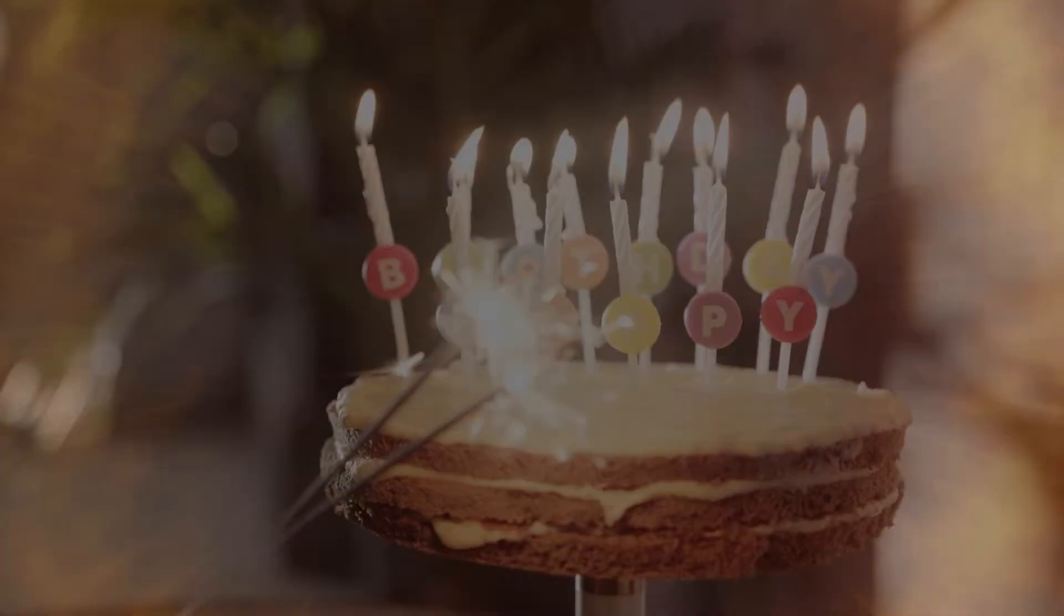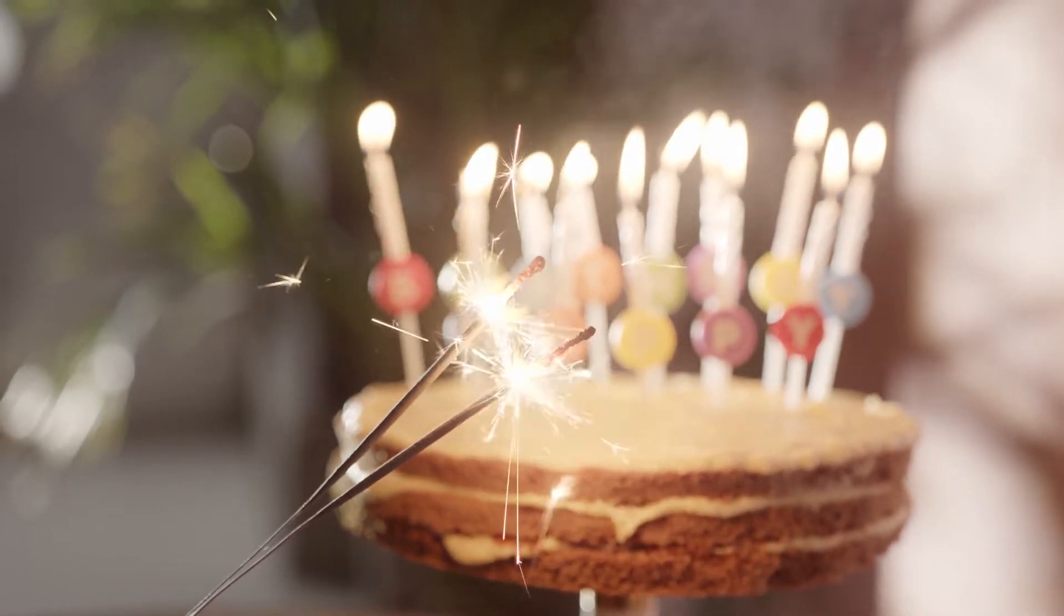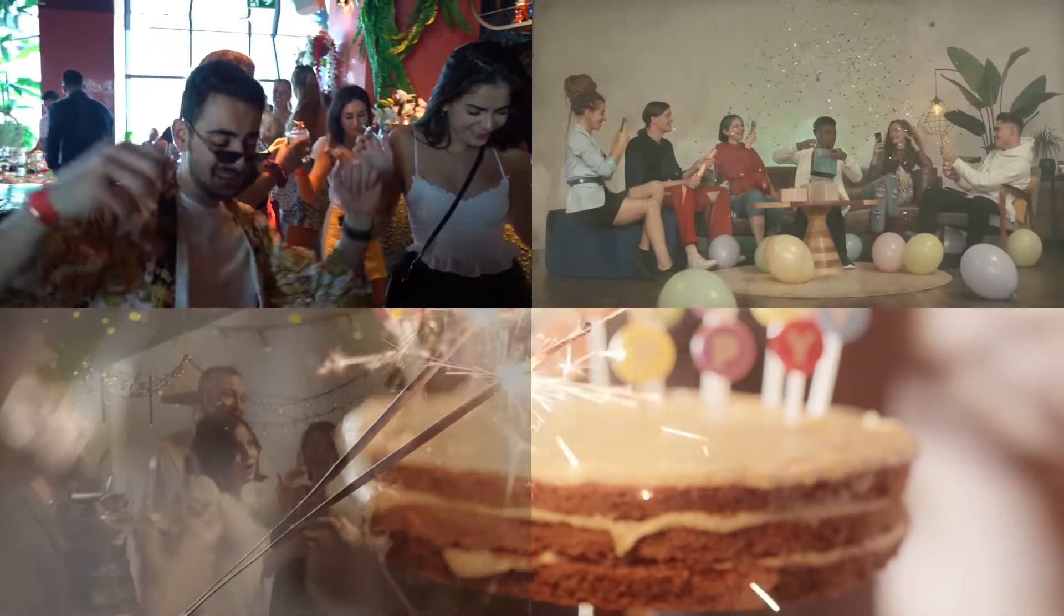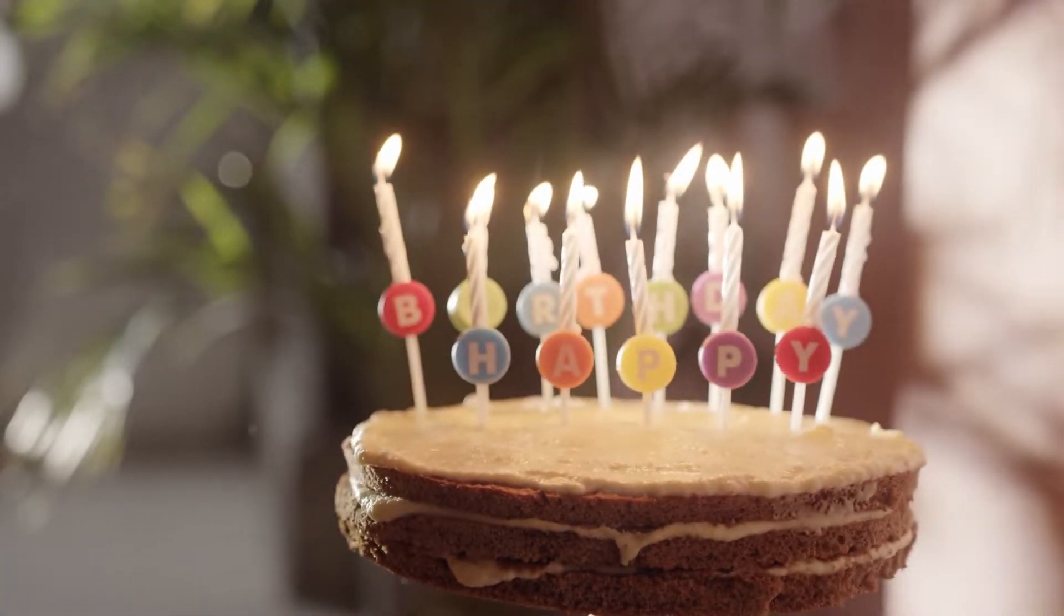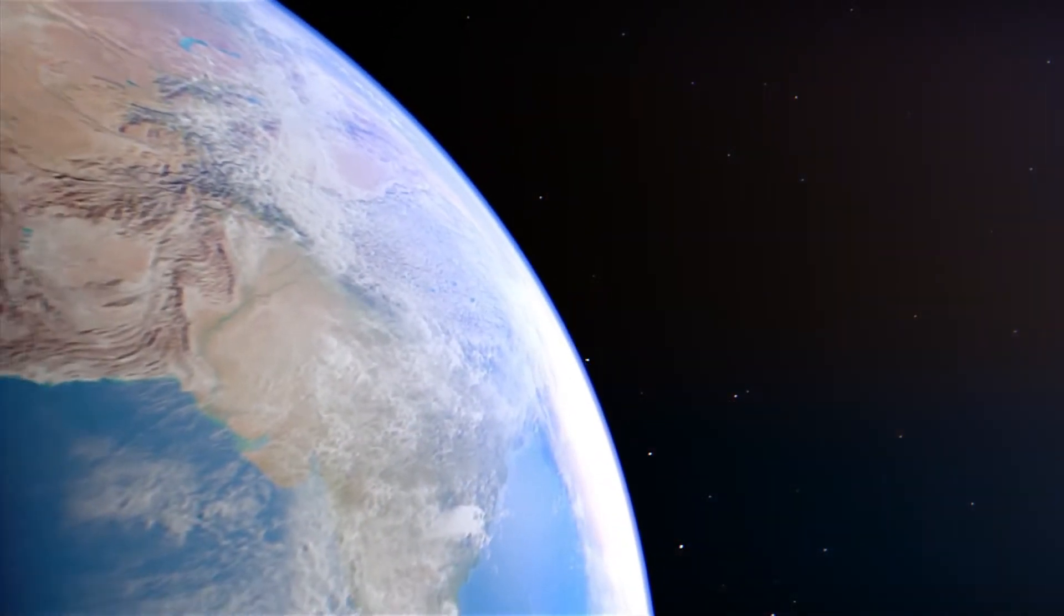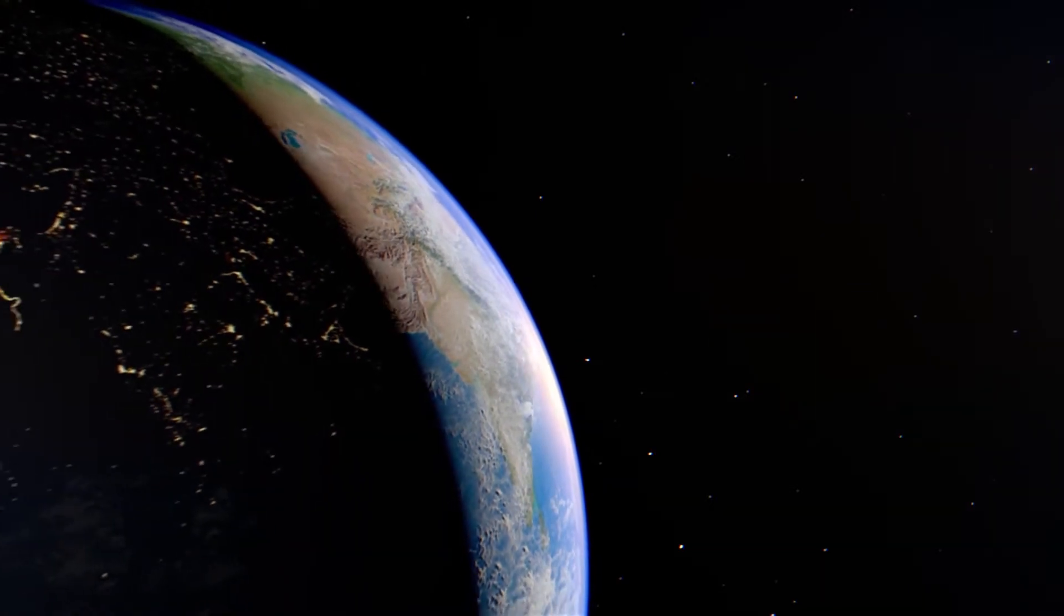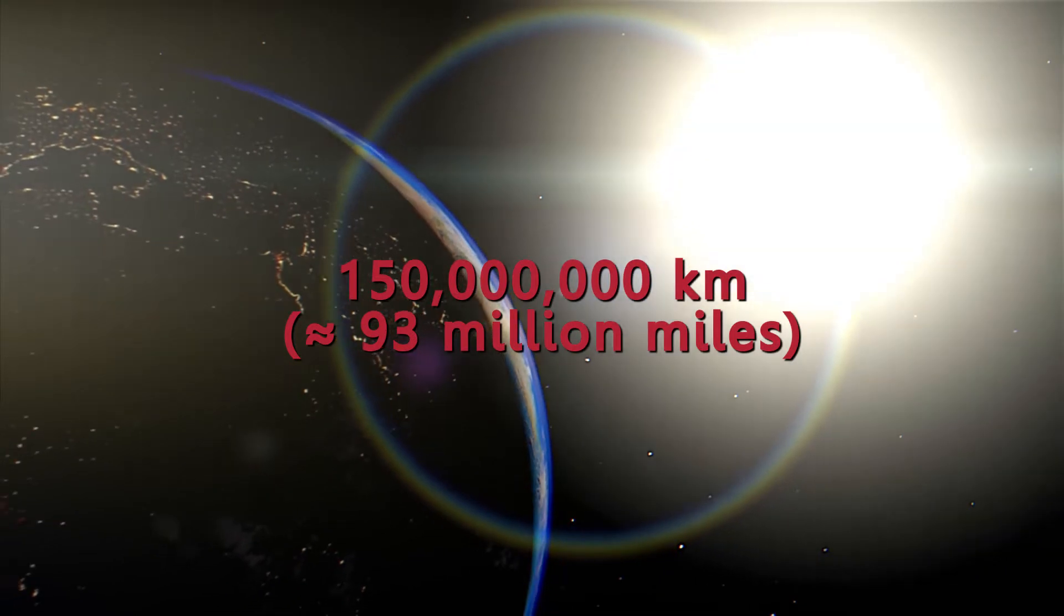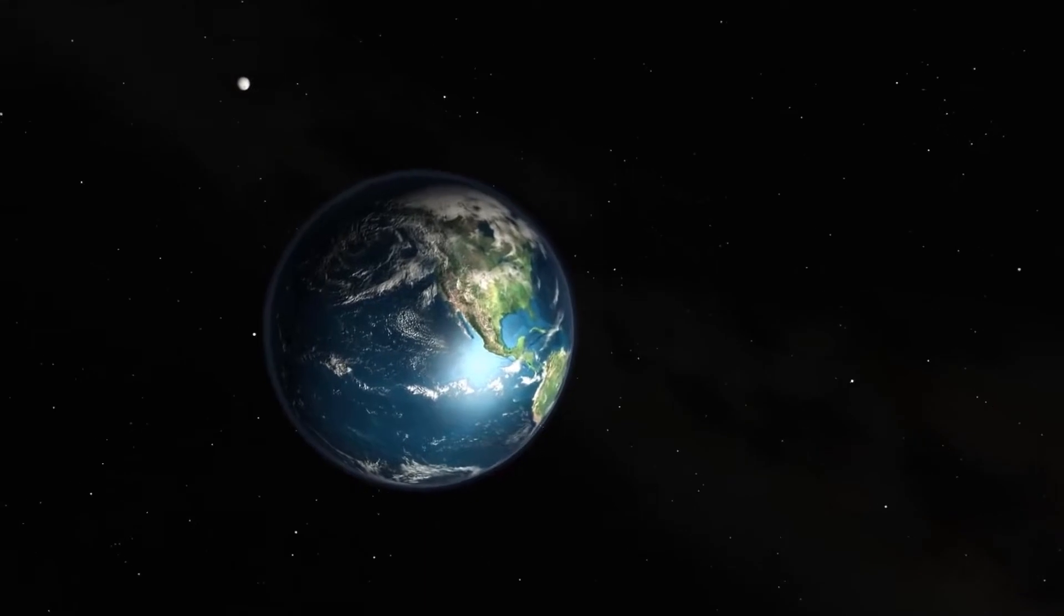When someone asks how old are you, your answer is a number: 18, 24, 36, or whatever your age is. However, what we call a year represents a full revolution of our blue planet around the sun, located at about 150 million kilometers away from Earth. To go around the sun once, adding thus one year to your age, our blue planet travels an impressive distance of about 940 million kilometers.